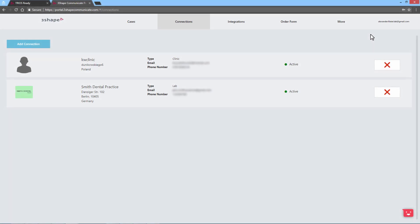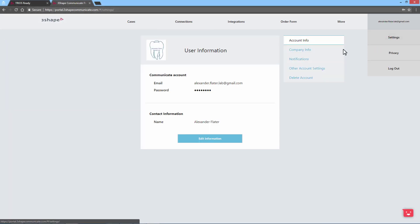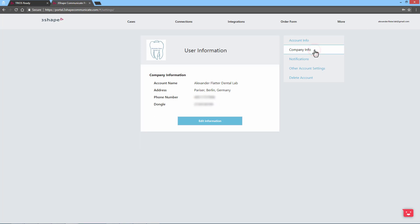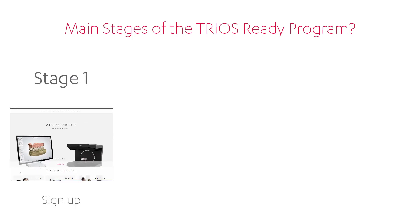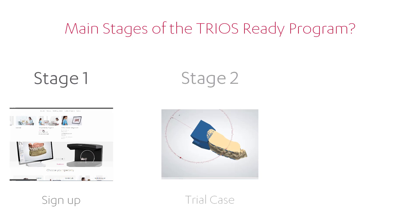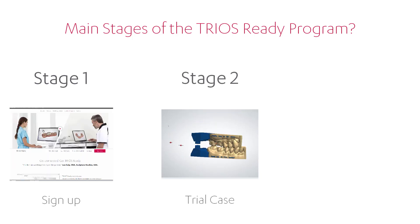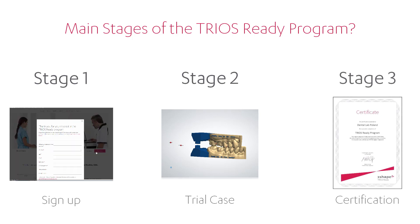Before you proceed, make sure you've created a 3Shape Communicate account with valid information about your lab, or adjust the data on an existing account on the Communicate portal. Now you can become TRIOS ready in three easy steps. Stage one: sign up on our website 3Shape.com. Stage two: create and manufacture the special trial case. Stage three: evaluation of the results and certification.